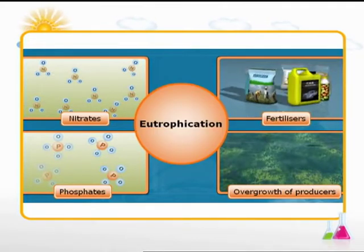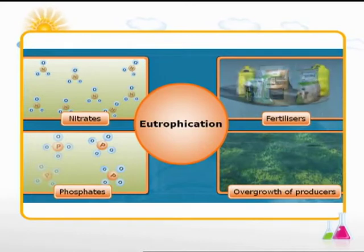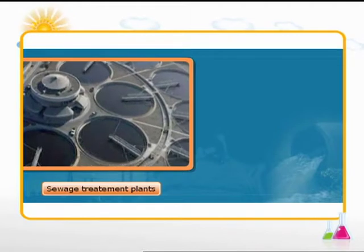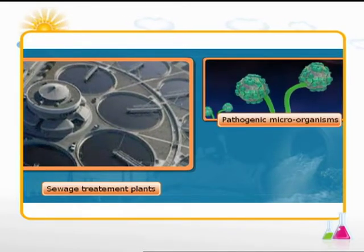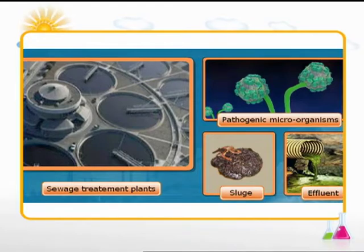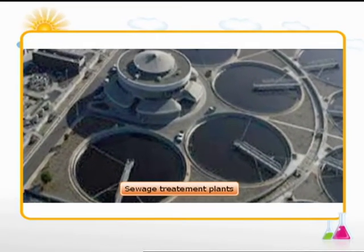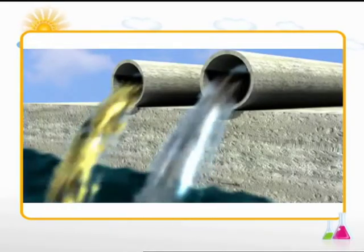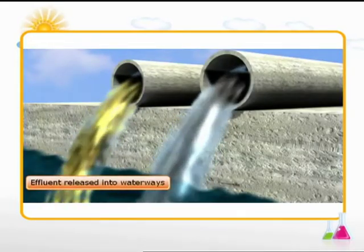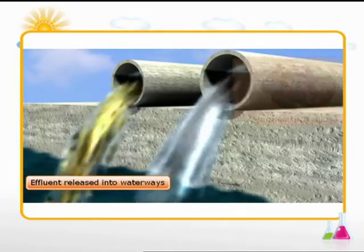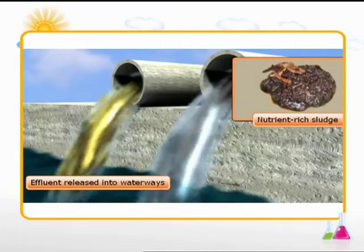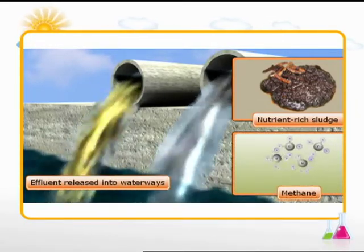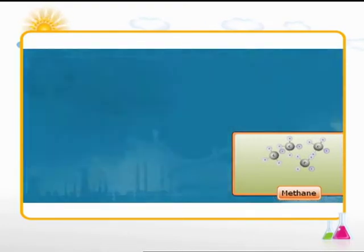Water-soluble nitrates and phosphates present in fertilizers cause the overgrowth of producers in the aquatic environment, which affects the ecosystem — this is eutrophication. These nitrates and phosphates are removed from the effluents before releasing them into the water bodies. Sewage treatment plants also get rid of pathogenic microorganisms from the sludge and the effluents, thus aiding in controlling water pollution. After sewage is treated, the effluent is released into the water bodies.